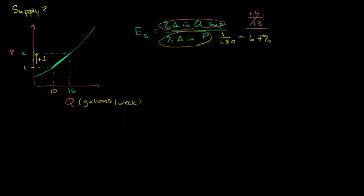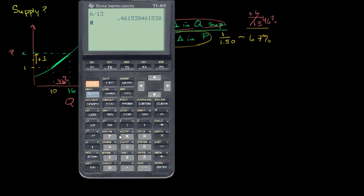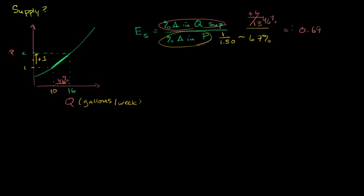So this right over here is 46%. When we had a 67% increase in price, we had a 46% increase in quantity supplied. So our elasticity of supply is 46% over 67%, which is going to be something less than 1. That gives us an elasticity of supply of approximately 0.69, which tells us that we get a smaller percent change in quantity supplied than our percent change in price at this price point.